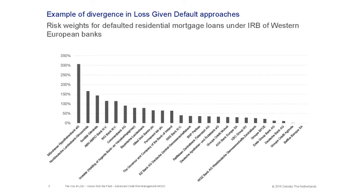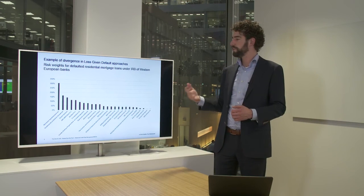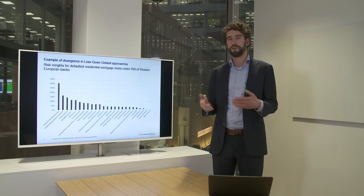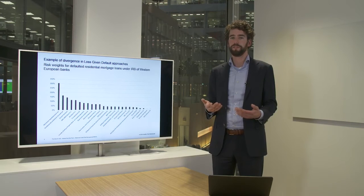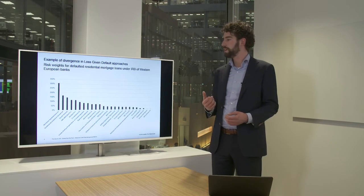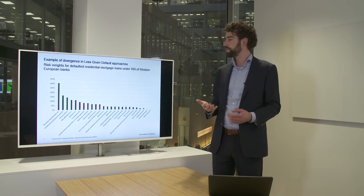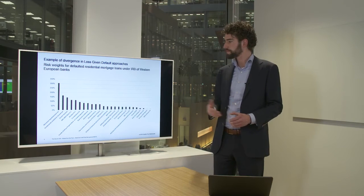Let's get back to one of the examples we looked at in the previous session of Voices from the Field — the future of IRB. One example was the huge variation between risk weights for defaulted residential mortgage loans. In this chart, on the left-hand side we see risk weights of 300%, and on the right-hand side a risk weight of zero — a huge variation. We're looking at defaulted assets. An obvious reason for these differences is the definition of default and different interpretations. Another driver, and that's what we're looking at in this session, is LGD. There are lots of different interpretations for defaulted exposures when developing loss-given default models.